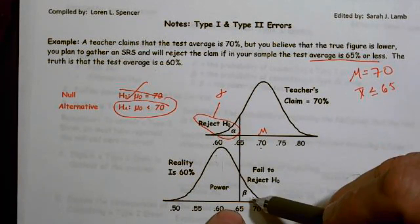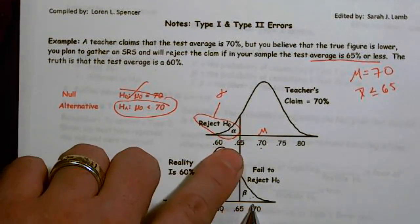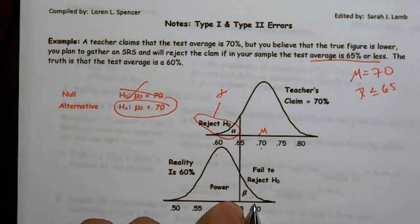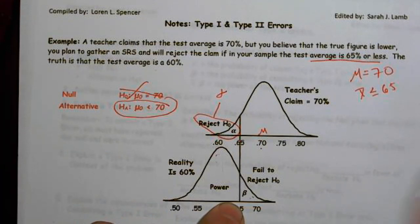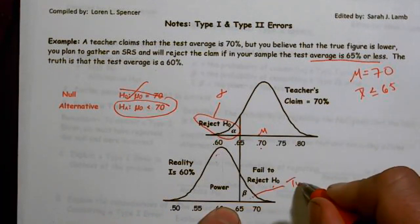But you take a sample. And if you get above a 65, you're not going to reject my claim. And that would be failing to reject. If you fail to reject, that's a type 2. So this is my type 2 error category.